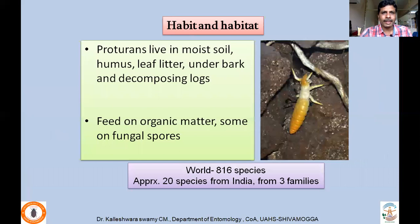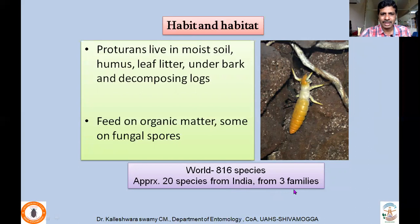Coming to the habit and habitat of proturans: they live in moist soil, humus, leaf litter, under bark, and in decomposing logs. They feed on organic matter, and a few species also feed on fungal spores — mainly decomposing organic matter. Worldwide, 816 species have been described, and from India approximately 20 species have been described from three families.